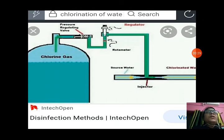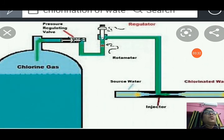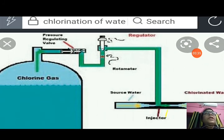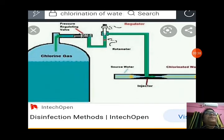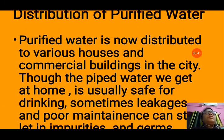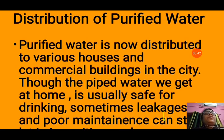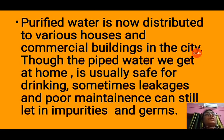You can see here the chlorination tank, where chlorine gas is passed through the water so that all the germs present in the water are killed. After that, distribution of purified water is done — the purified water is now distributed to various houses and commercial buildings in the city.